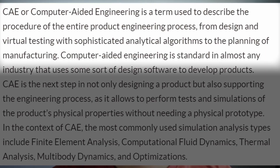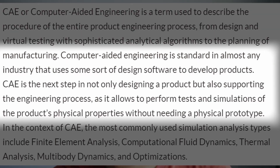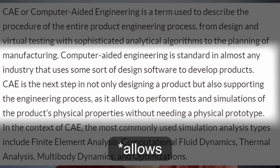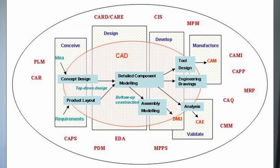So then you might ask: but what is Computer Aided Engineering? This post from SimScale puts it nicely. Computer Aided Engineering is a term used to describe the procedure of the entire product engineering process, from design and virtual testing with sophisticated analytical algorithms to the planning of manufacturing. CAE is standard in almost any industry that uses some sort of design software to develop products, and it is the next step in not only designing a product but also performing tests and simulations of the product's physical properties without needing a physical prototype. And this picture on Wikipedia puts it all together showing how all the different packages link together.